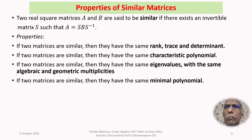Therefore, option 4 is not always true — it is not a property. To confirm this, we need to give a counter-example. Options 1, 2, and 3 are all well-known results found in standard textbooks of linear algebra, and their proofs are widely available.